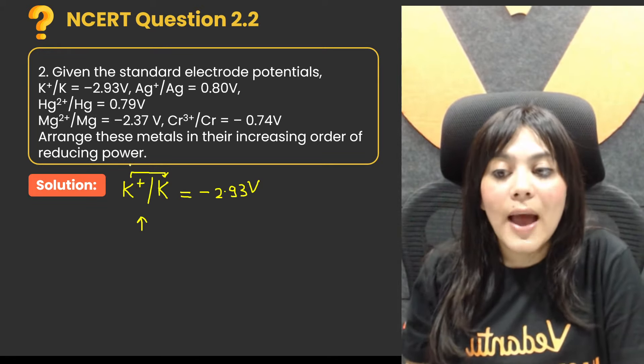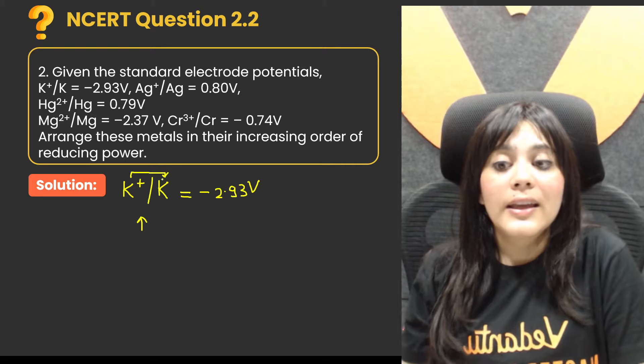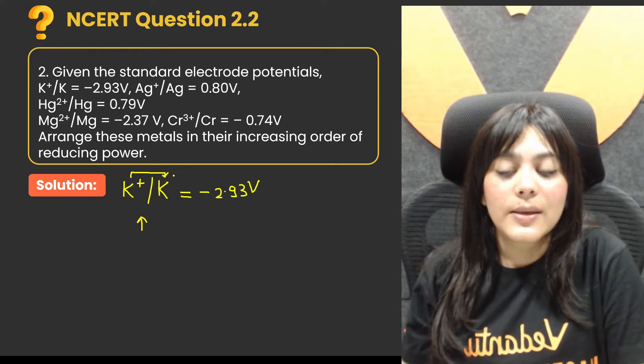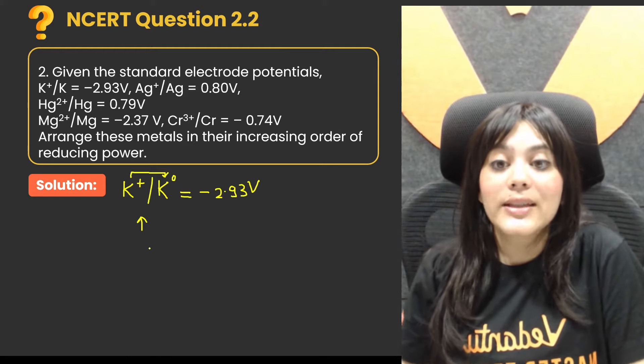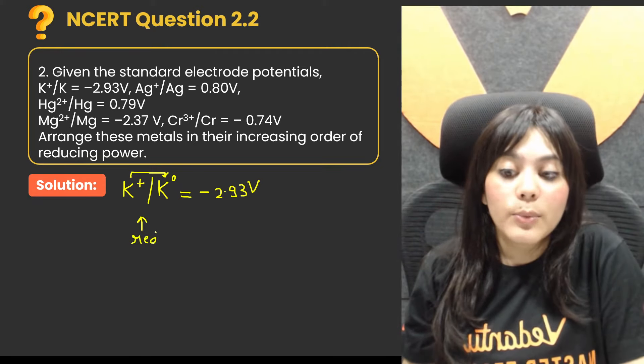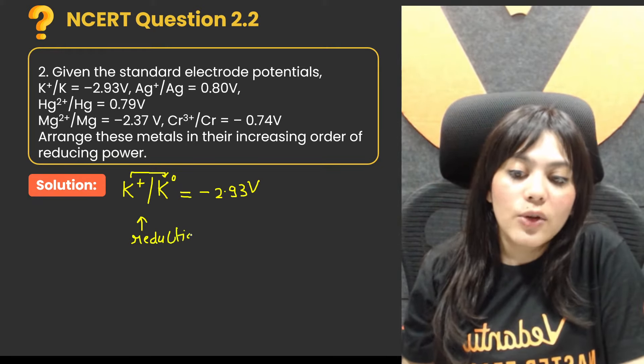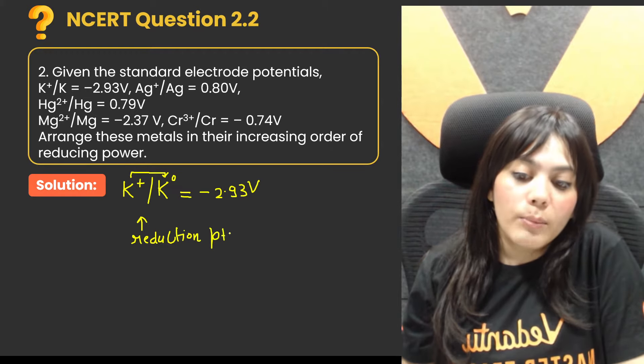Because it is reduced, here is plus oxidation state. Here is potassium oxidation state zero. So here what is reduced. So this standard electrode is called reduction potential.